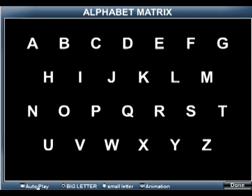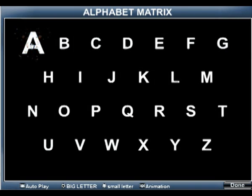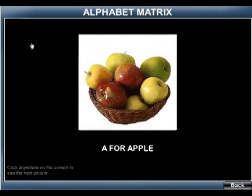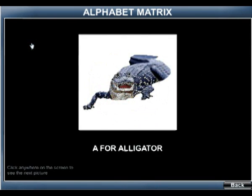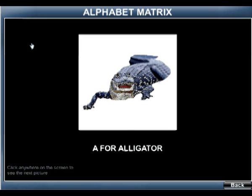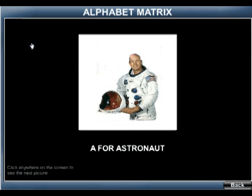Press the Back button to go back to Alphabet Matrix. Press the Done button to go to the main menu. A — A for Apple, A for Alligator, A for Ape, A for Astronaut.